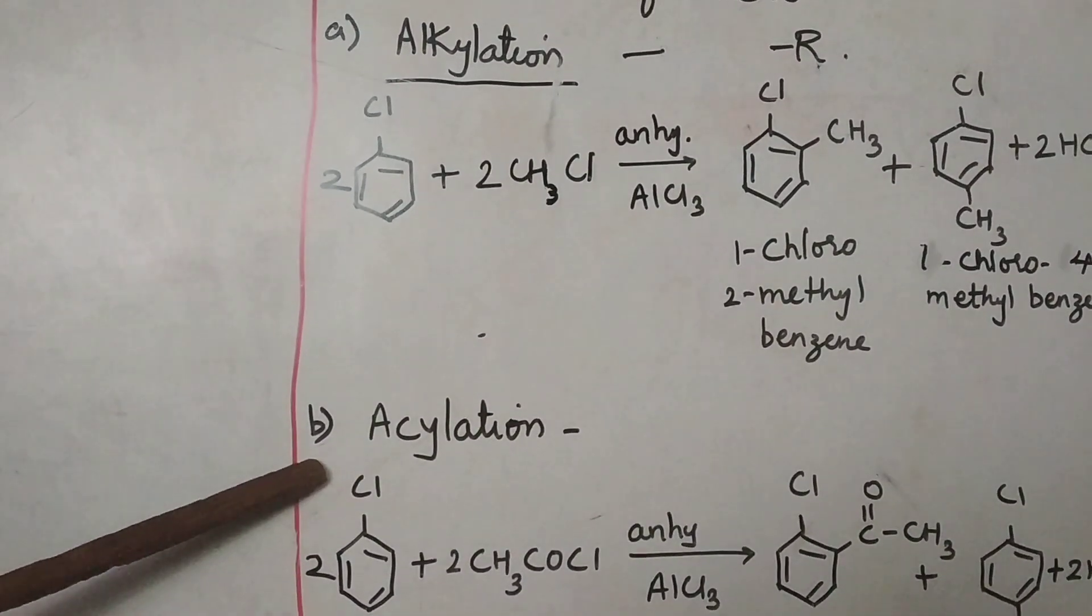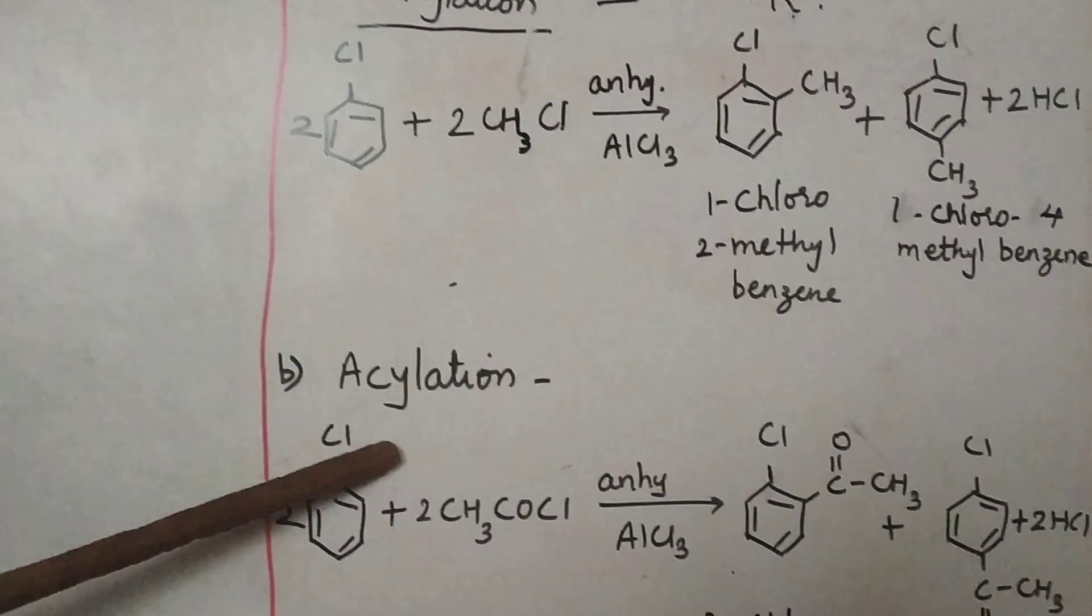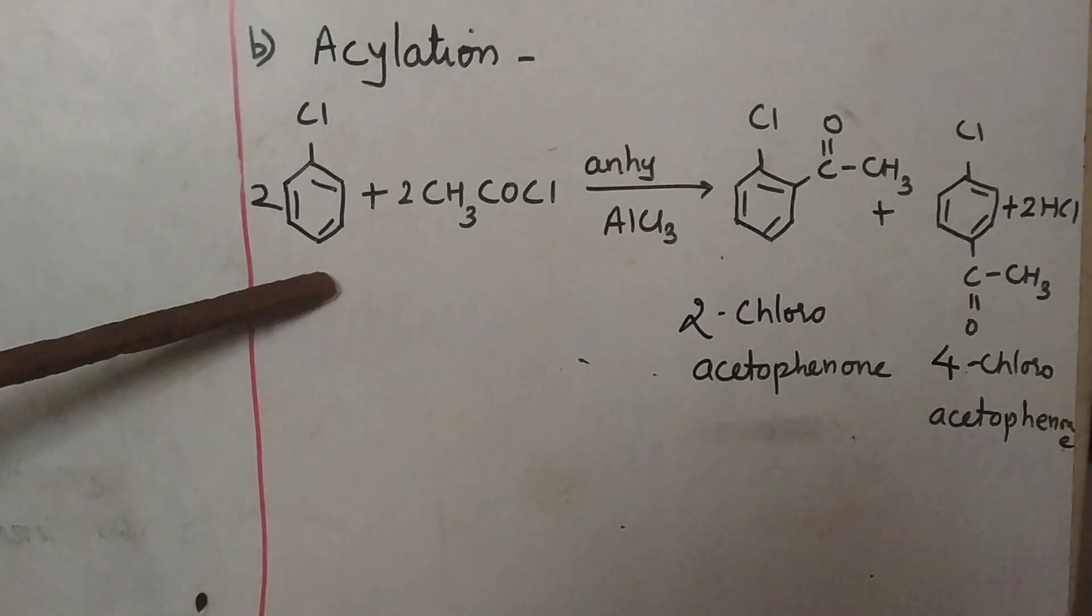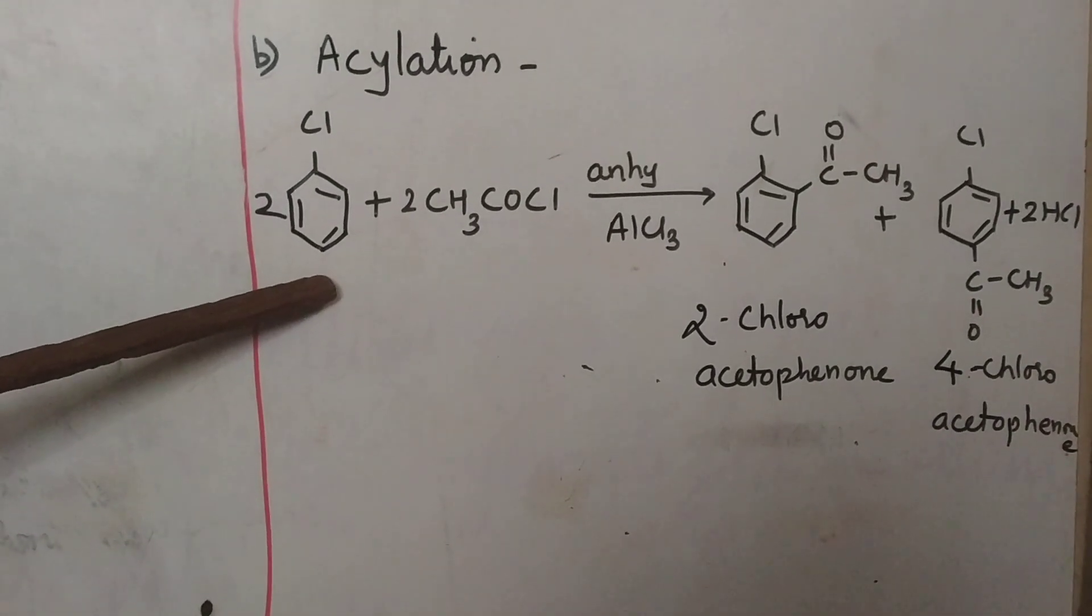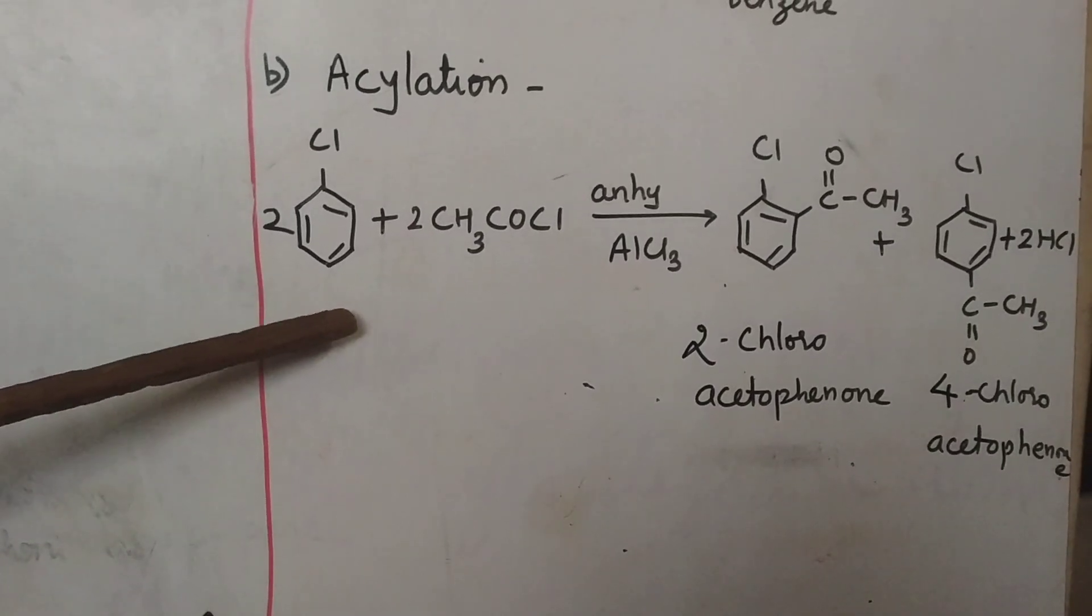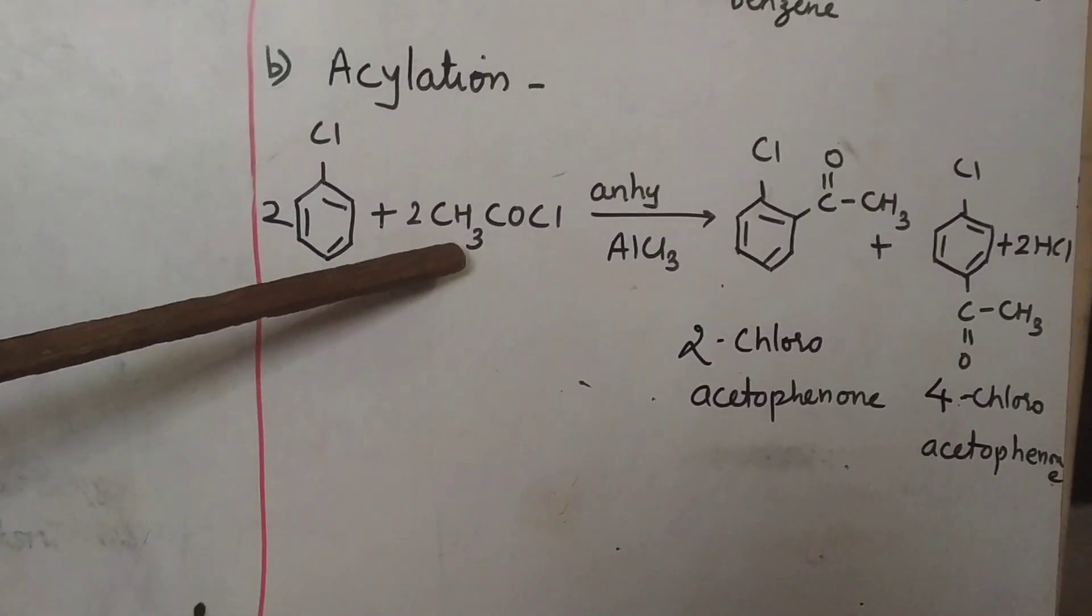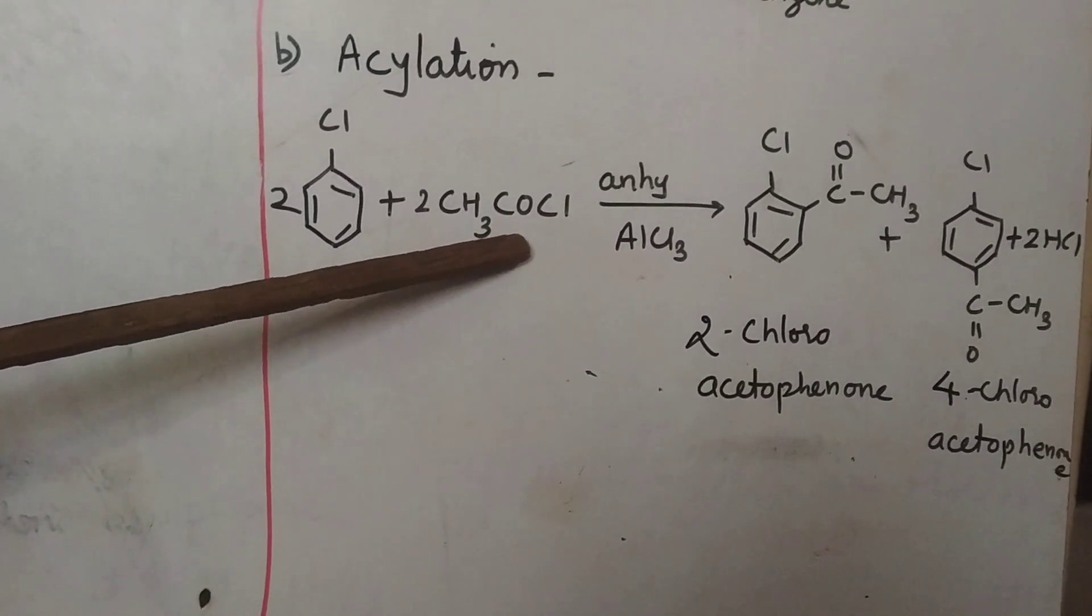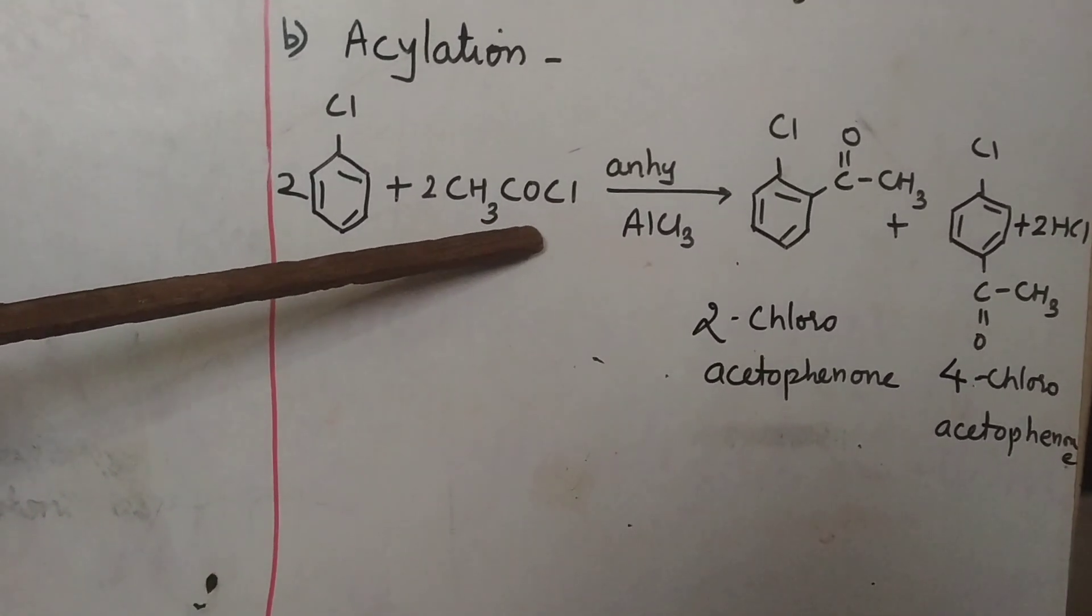Second is Friedel-Craft acylation. In acylation, you will find that the hydrogen atom of the aromatic ring is replaced by acyl group. Acyl group is RCO. Now, in this particular we are using CH3CO group. This is called as acetyl group, CH3CO group, acetyl group.